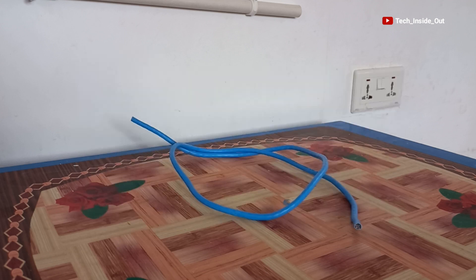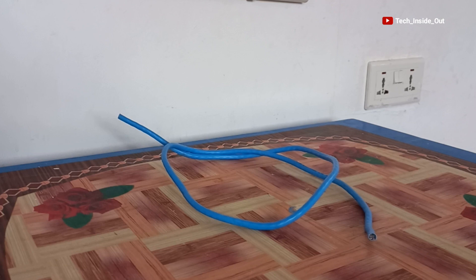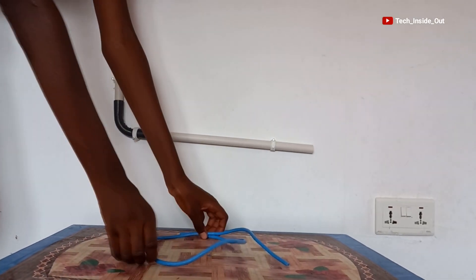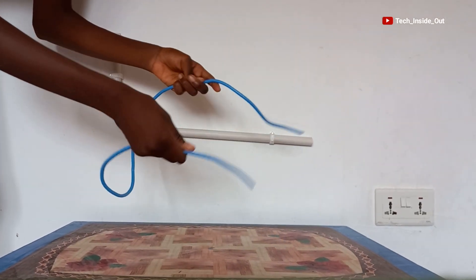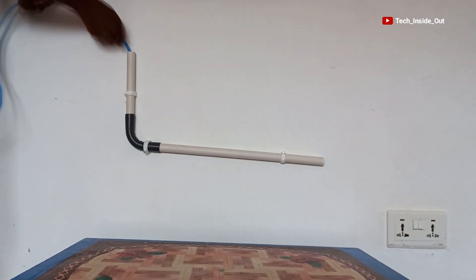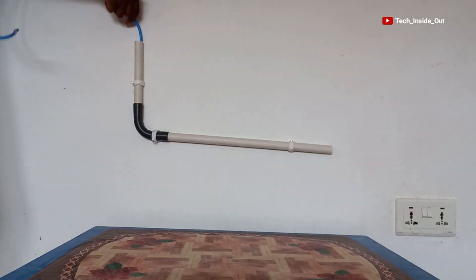Let's use this CAT6 network cable for the demonstration. If we are to lay this cable through this pipe, looking at the flexibility of the cable, you cannot by the use of your hand push it through to the end of the pipe. So what can we do in this case?